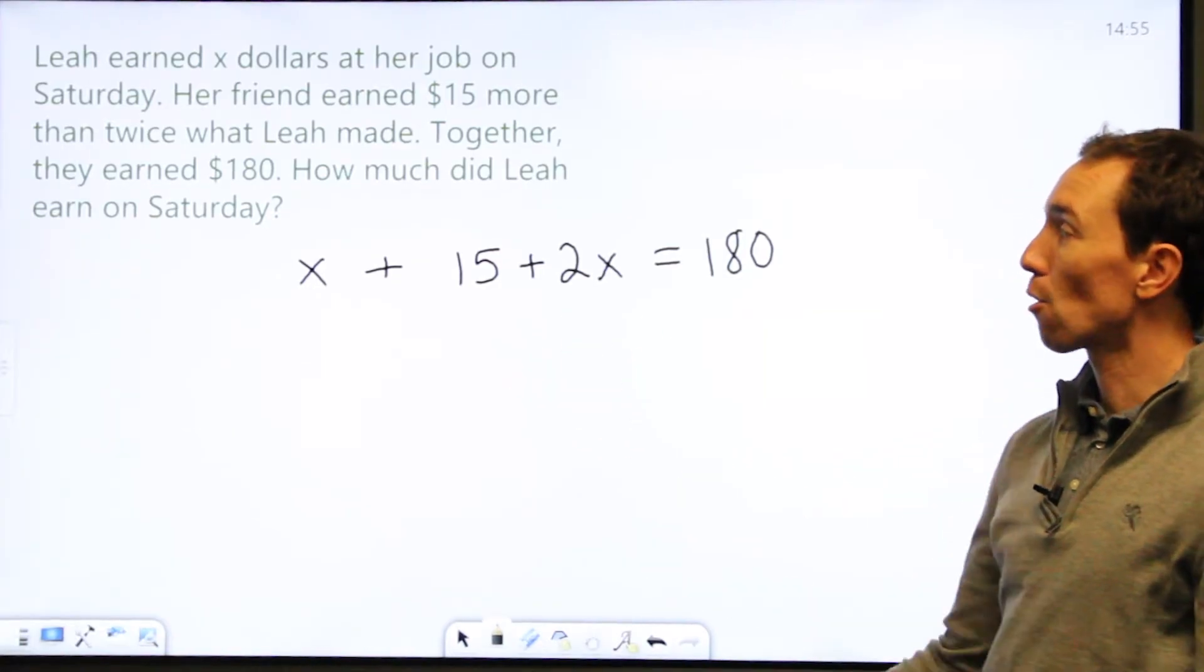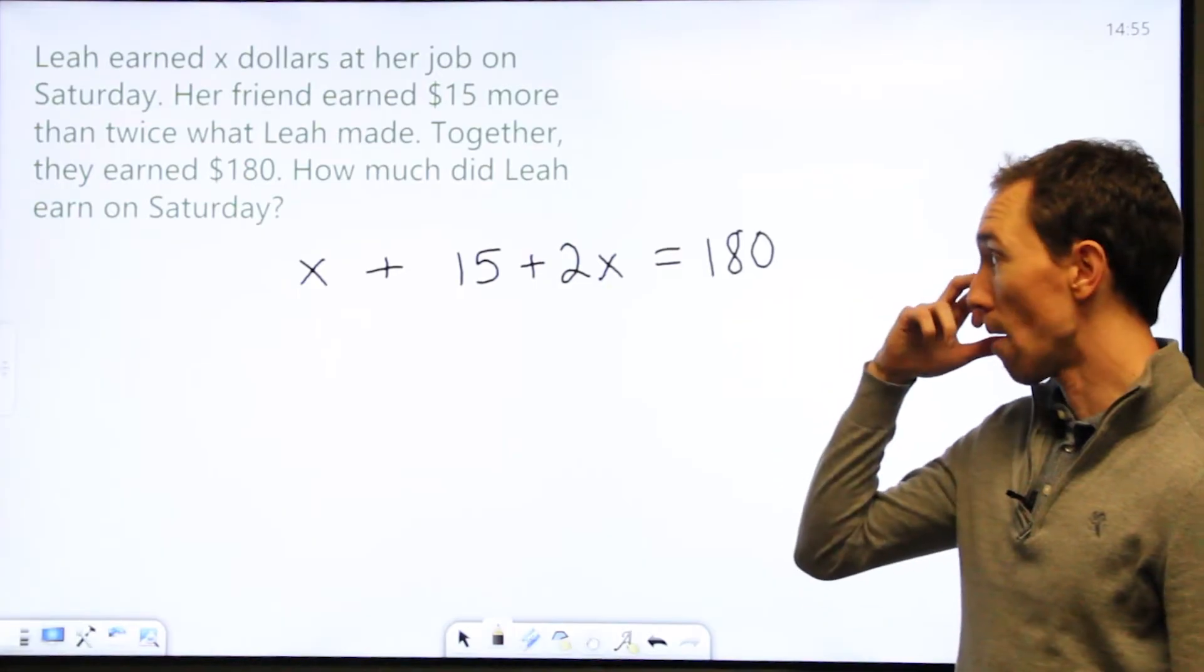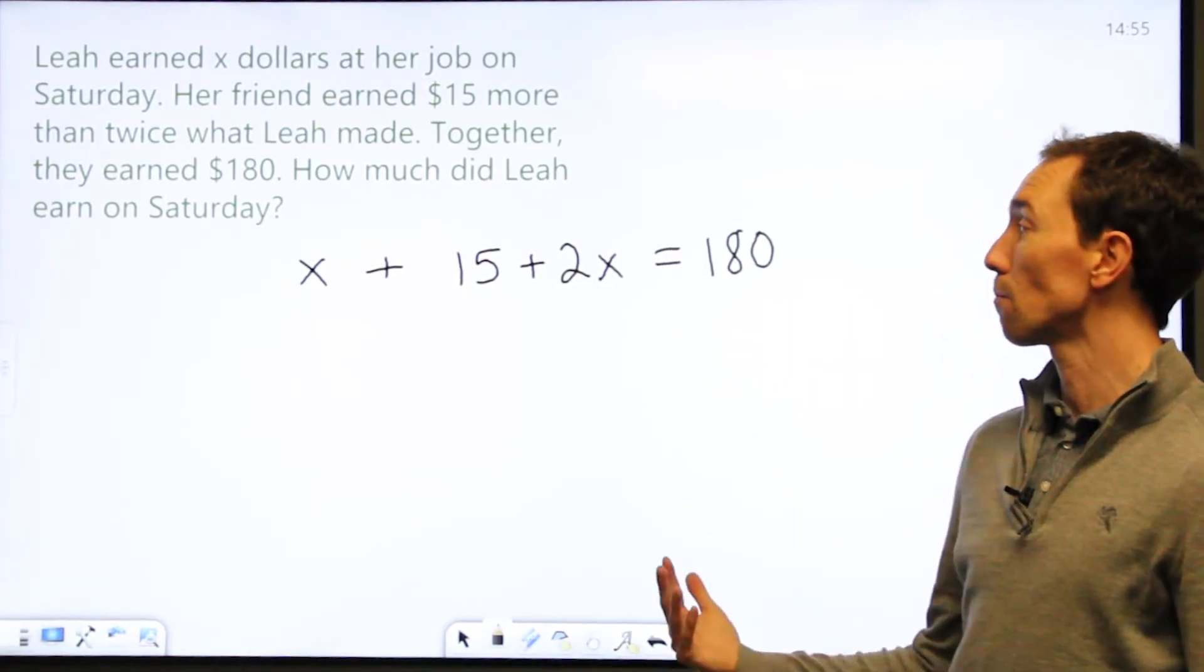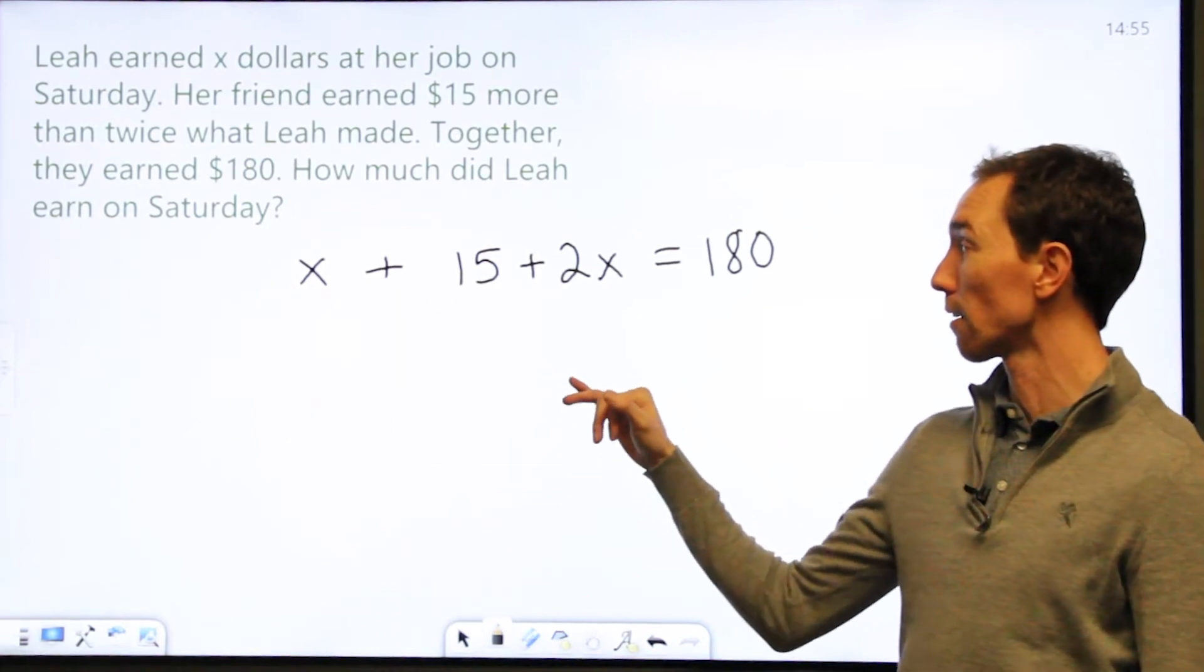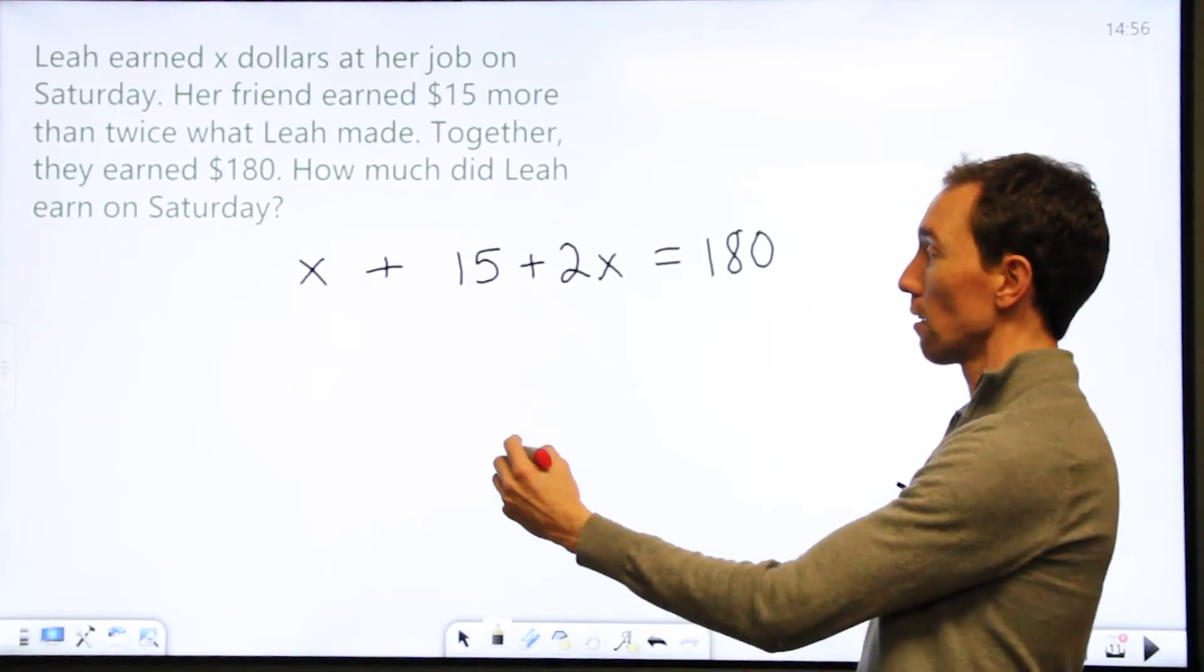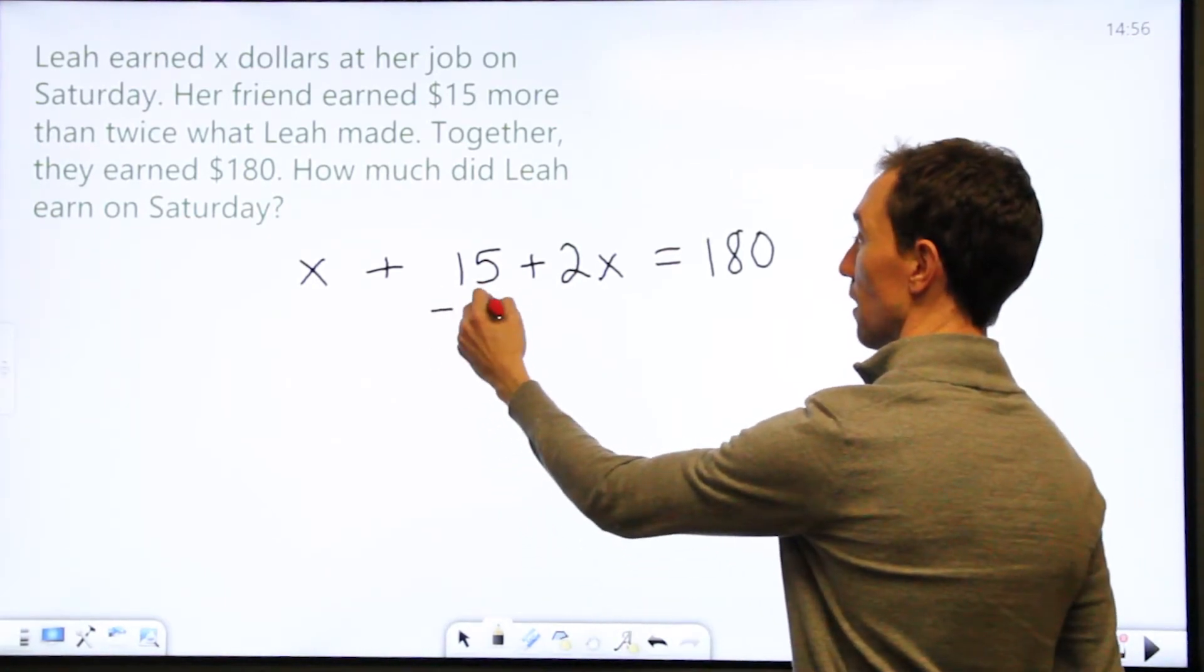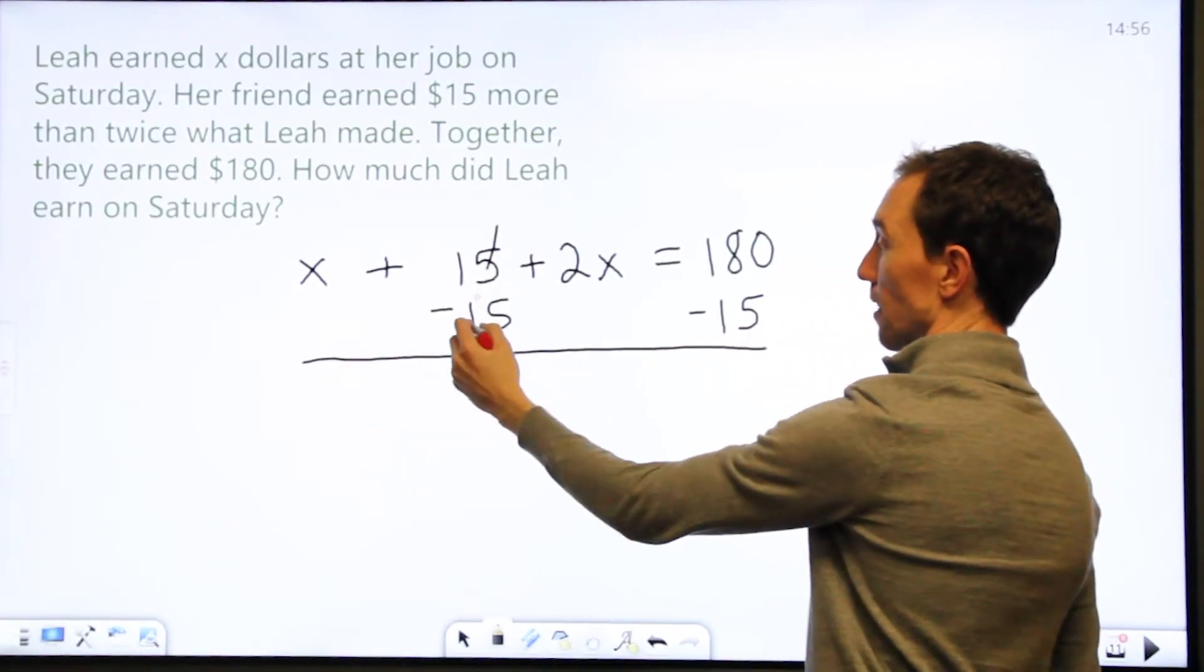I know that I have a multi-step equation, and I did a video on this before so if you want to check that out that'd be great. I need to get my X's on one side and my numbers on the other. So I'm going to subtract 15 here and subtract 15 here so I can get my numbers together and my X's together. So I have X, I have plus 2X, and I have 180 minus 15 which is 165.